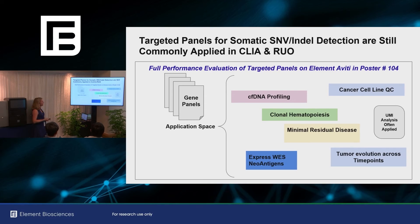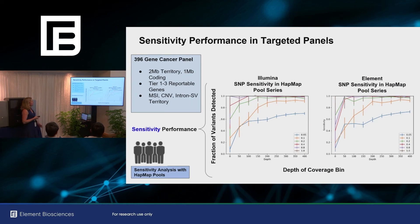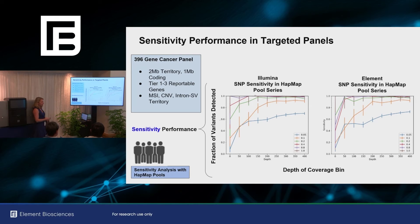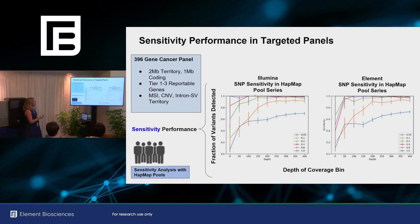The sensitivity performance in the targeted panel comparison was also really comparable between our prior benchmarking exercises with Illumina. We use a HAP map pooling strategy to simulate the presence of somatic variants. We pool together groups of HAP map samples so we can assay variation at a range of both target depth and allele fraction — because in cancer we're looking for tumor heterogeneity, and we really want to see variants at the 5% VAF and 10% VAF range in these targeted panels. We have very similar sensitivity between Illumina and Element.